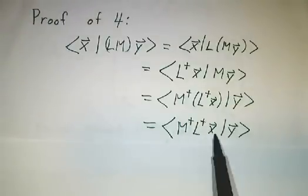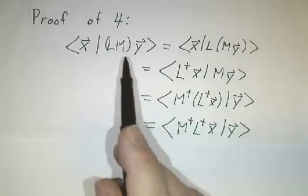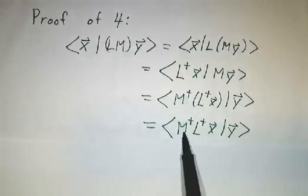So M-dagger L-dagger acting on x gives you the same result as LM acting on y. Therefore, the adjoint of LM is M-dagger L-dagger.